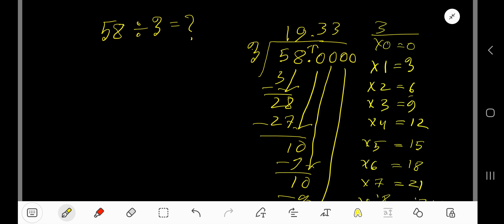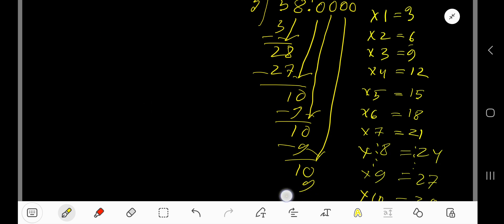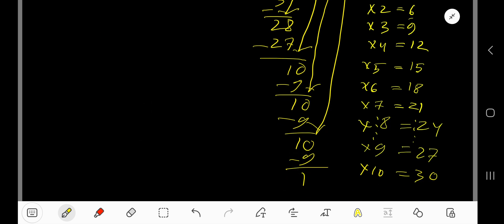Bring down another zero, so 3 goes into 10, again 3 times. 3 times 3 is 9. Subtract, you're getting 1.